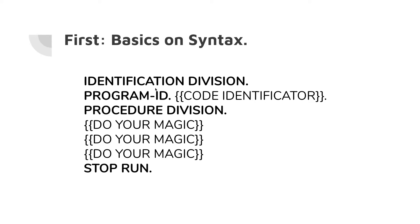It starts with the header, which has to include the identification division, then the procedure division. After that you can start doing your magic. After you put in all the code you need to run the software, you have to type 'stop run'. COBOL is pretty strict on the syntax, so you'll have to type everything correctly, respecting capitalization and that kind of stuff.